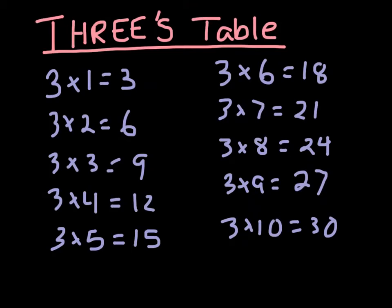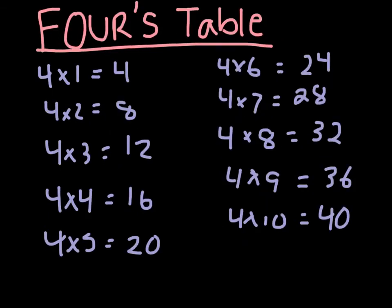Now let's go on to our threes table. It goes: 3 times 1 is equal to 3, 3 times 2 is equal to 6, 3 times 3 is equal to 9, 3 times 4 is equal to 12, 3 times 5 is equal to 15, 3 times 6 is equal to 18, 3 times 7 is 21, 3 times 8 is 24, 3 times 9 is 27, 3 times 10 is 30.